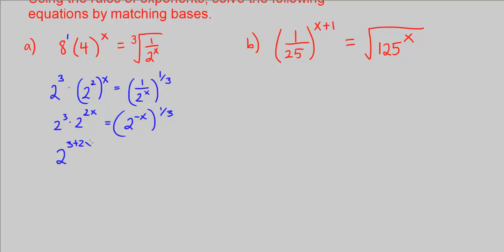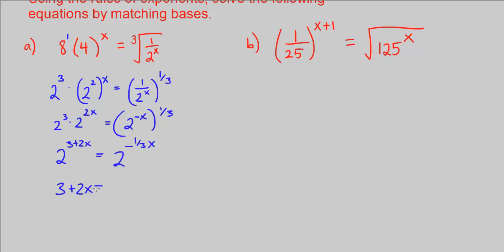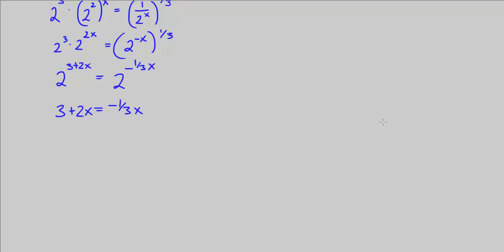3 plus 2x equals — and we're going to multiply these because we're raising it to another power — so it's 2 to the negative x times 1 third, or negative 1 third x. Same base now, we can go ahead and set the exponents equal to each other.